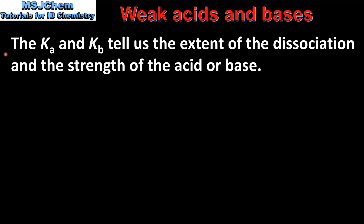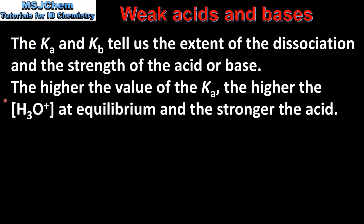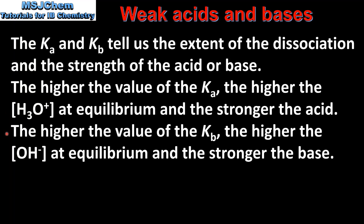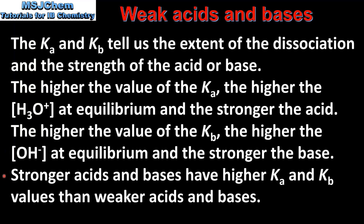To summarize: the magnitude of the Ka and Kb tell us the extent of dissociation and the strength of the acid or base. The higher the value of Ka, the higher the concentration of hydronium ions at equilibrium and the stronger the acid. The higher the value of Kb, the higher the concentration of hydroxide ions at equilibrium and the stronger the base. Stronger acids and bases have higher Ka and Kb values than weaker ones. In the next video we'll look at how to calculate the values of Ka and Kb.